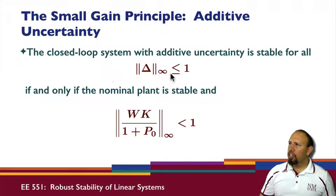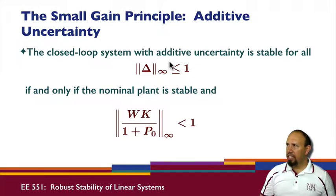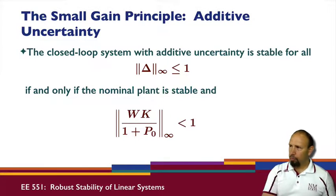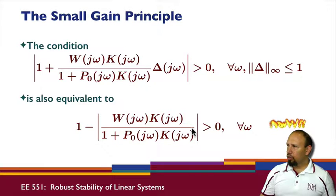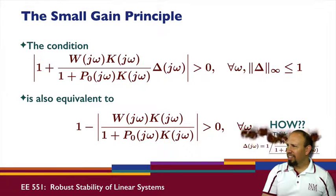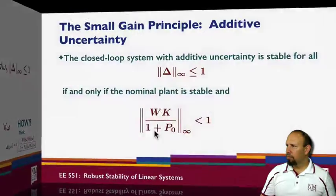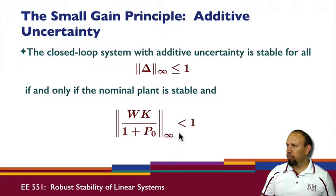For additive uncertainty, if we have this set of uncertainties, then the closed-loop system will be stable for that set if and only if the nominal plant satisfies this inequality. If this is true for all omega, then it certainly holds for the supremum — and the supremum is the infinity norm. So the infinity norm must be strictly less than 1.